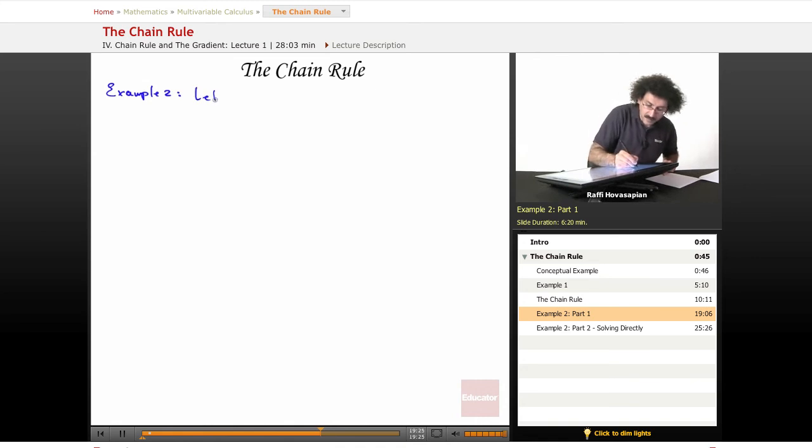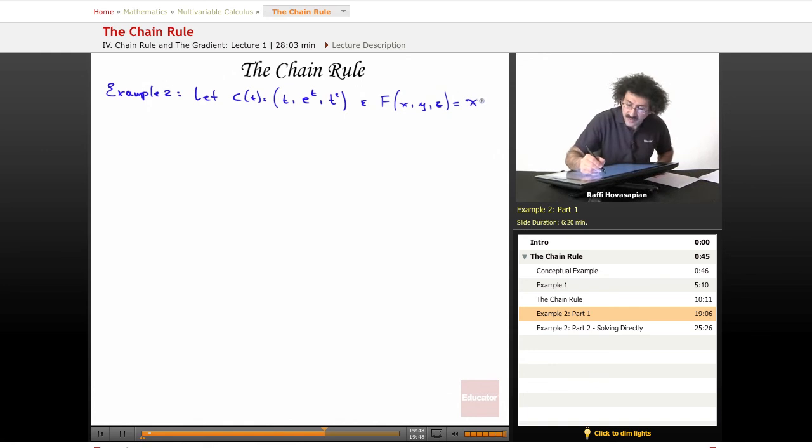Example two. Now we will let our curve C(t) be (t, e^t, and t²). And we'll let our function f(x,y,z), so we're definitely talking about a curve in three-space and a function of three variables,